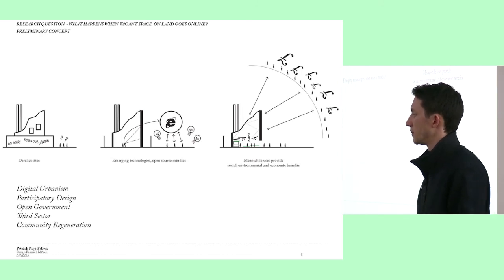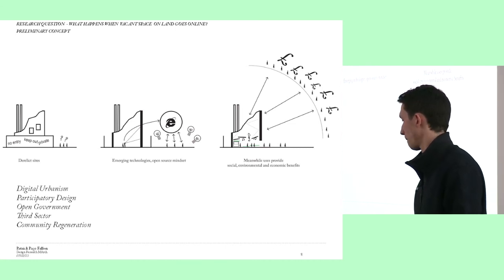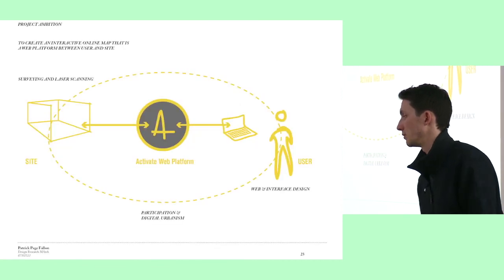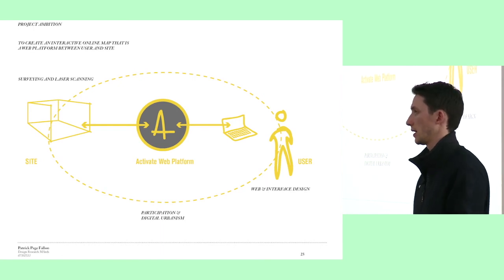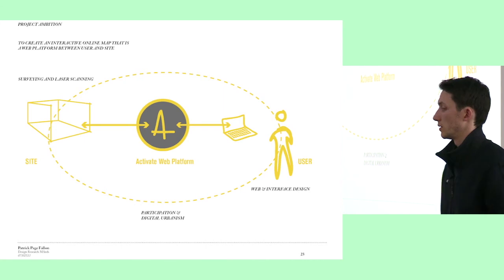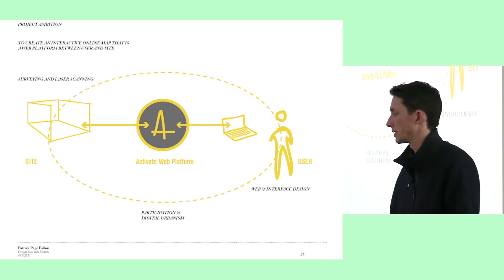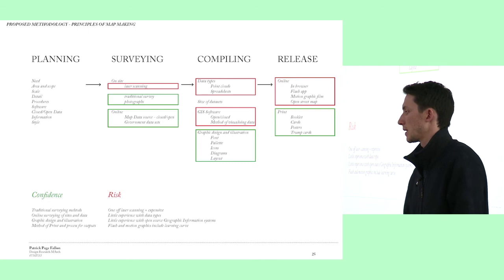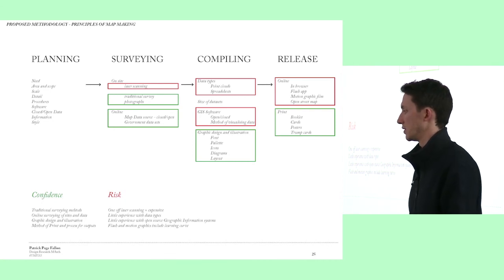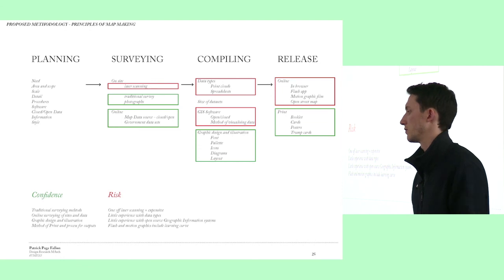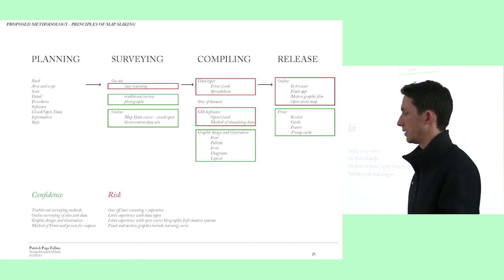The project used emerging technologies to see what meanwhile social, environmental and economic benefits could happen. It was just to connect the end user with a site through an active web platform, using a map — so I explored different mapping techniques. It touched on surveying as well, so as an architect by training I put the surveyor's hat on, and the GIS hat and the planner's hat, which is something I enjoy — not always staying in the comfort zone.